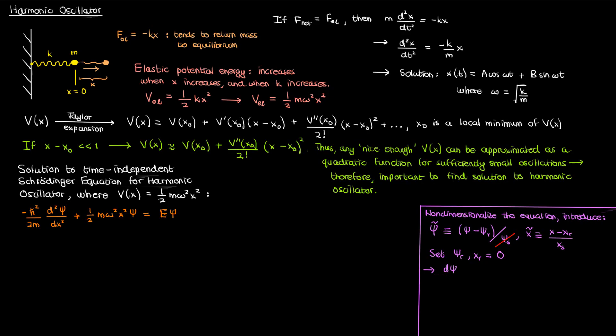Using the chain rule I can write the first derivative of psi with respect to x as d psi by dx tilde times dx tilde over dx. Since the derivative of x tilde with respect to x is just 1 over x sub s this is what we get for d psi by dx. Now the second derivative of psi with respect to x can be found by differentiating this equation again with respect to x.